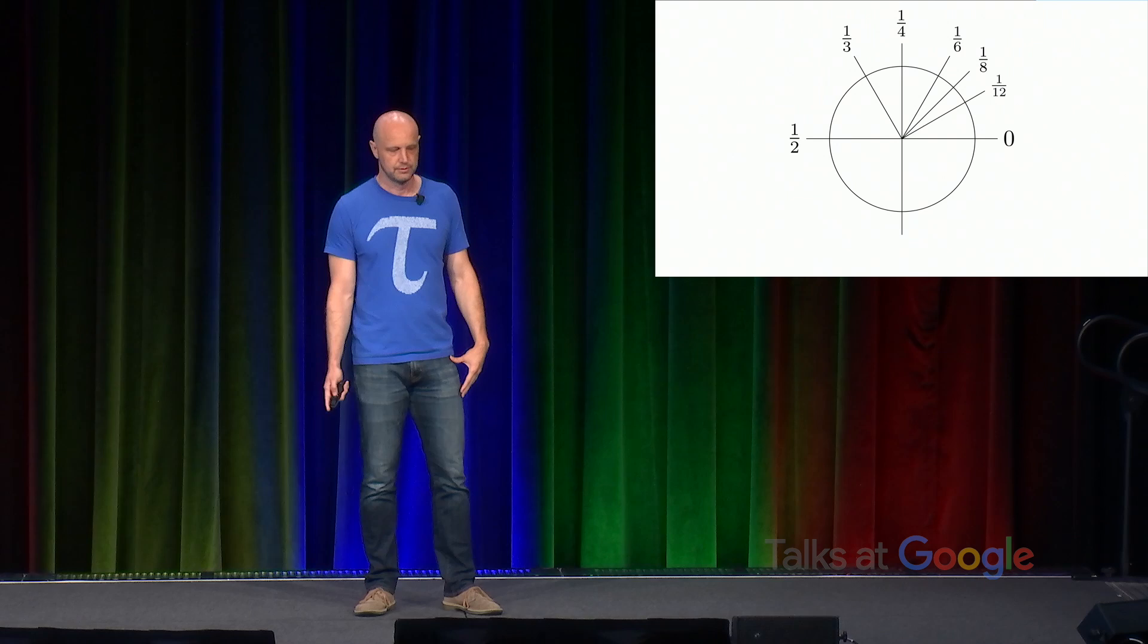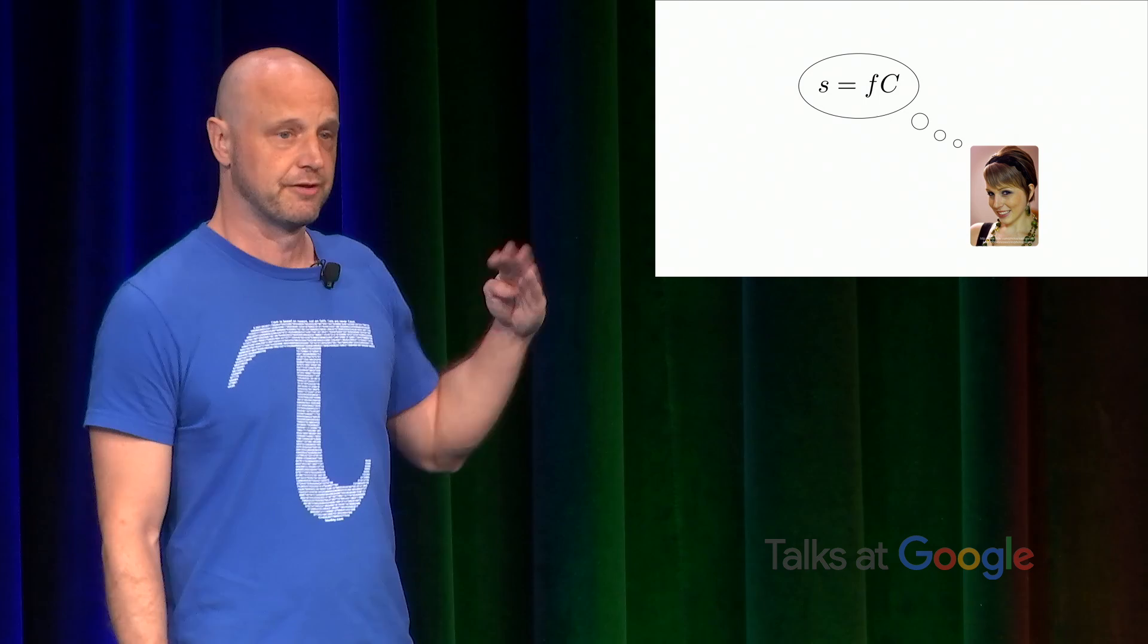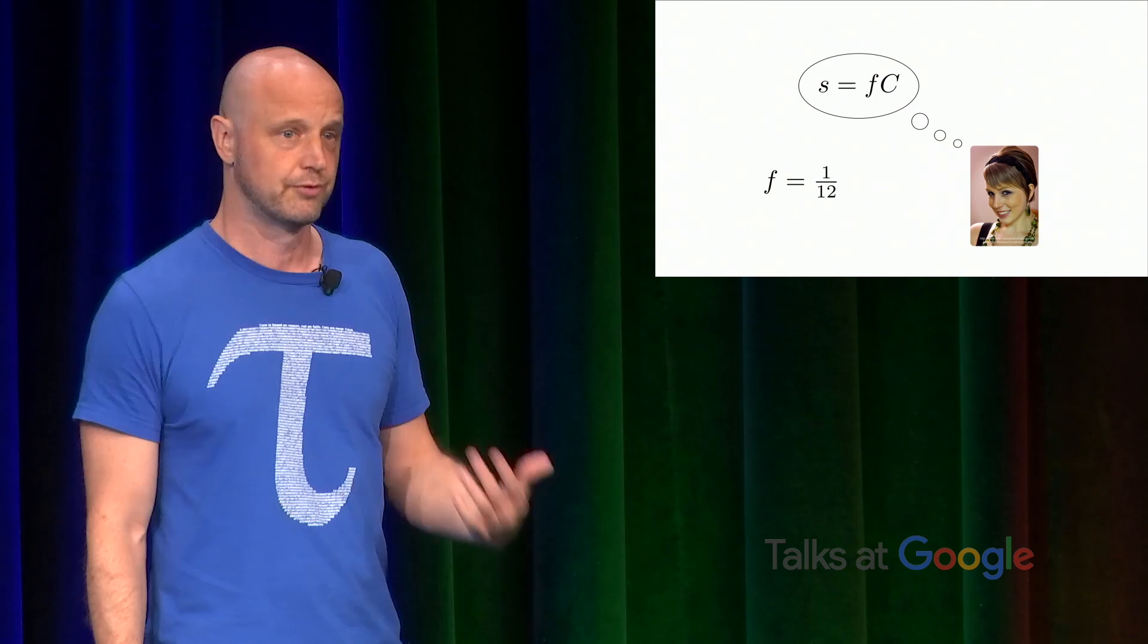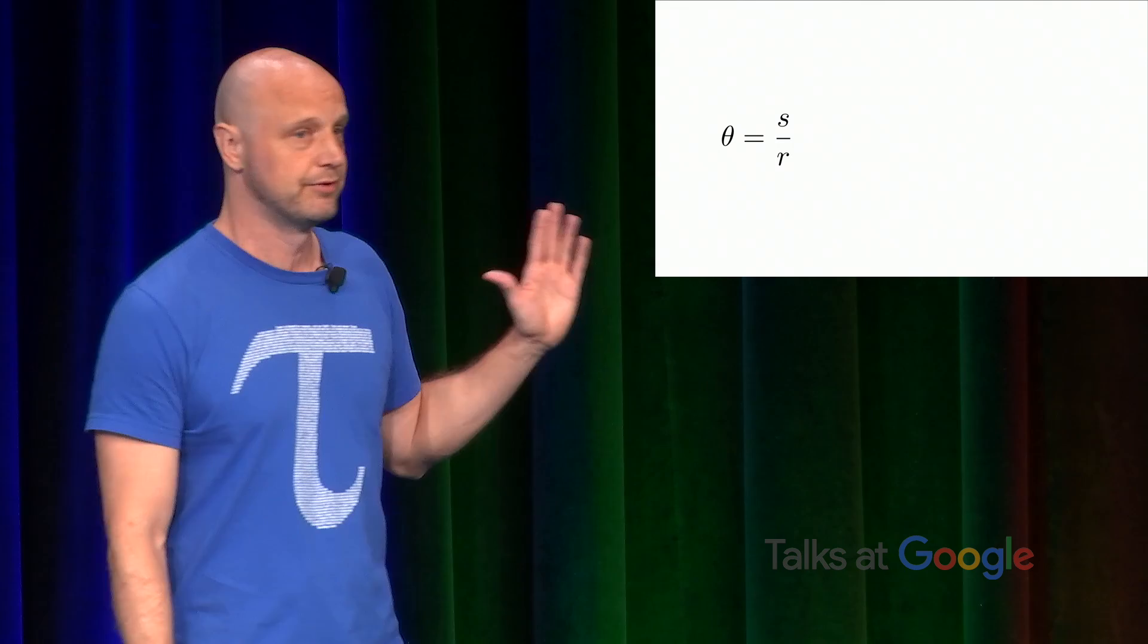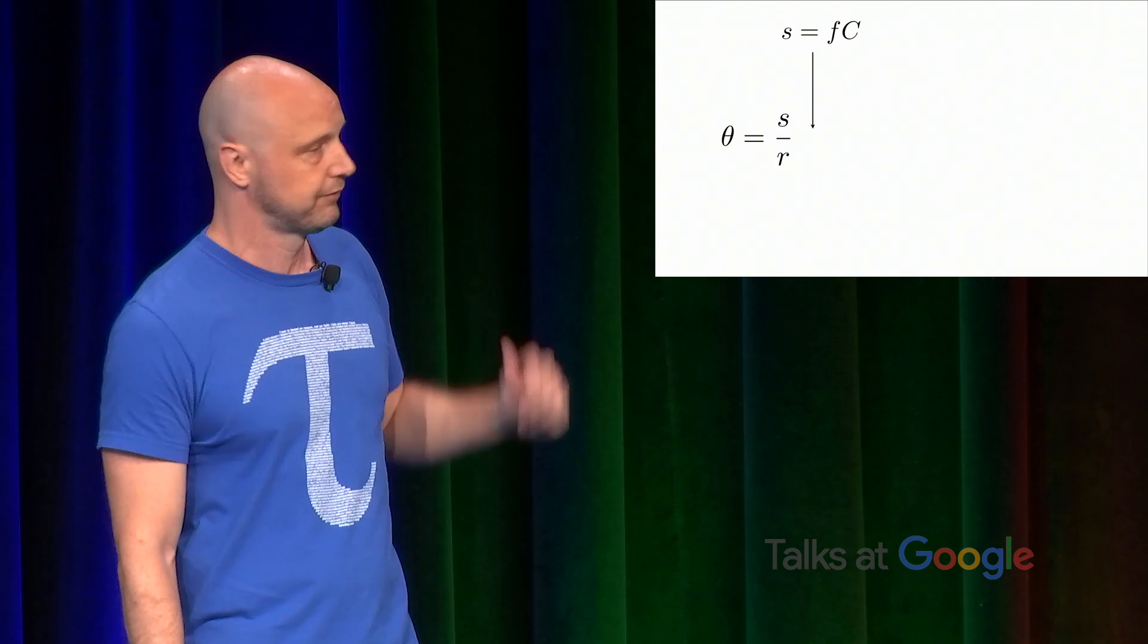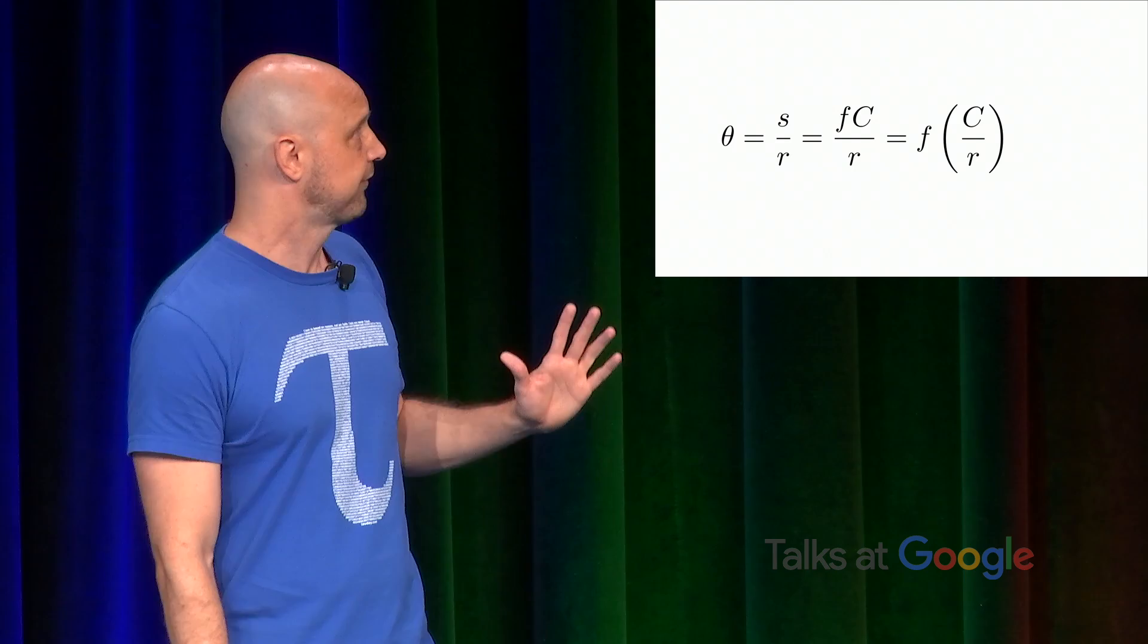So that suggests writing the arc length in terms of the fraction of the full circumference of the circle. So for a 30 degree angle, that fraction would be a 12th. For a right angle, it's a fourth, and so on. So if we then plug in to the definition of radian angle measure, we can see that theta is equal to S over R, but S is FC. So that's FC over R. We can factor out that fraction as the fraction times this dimensionless constant, C over R. But of course, that's just tau.